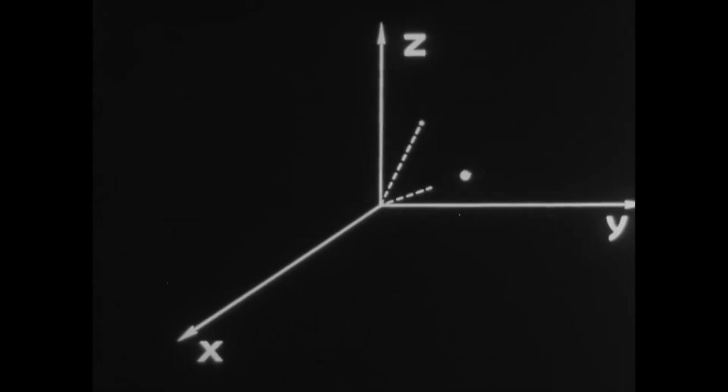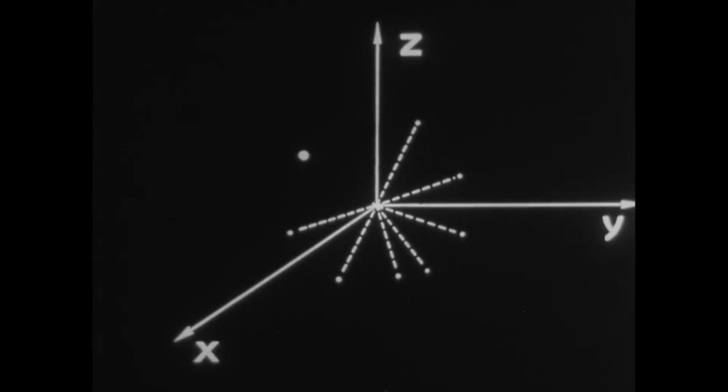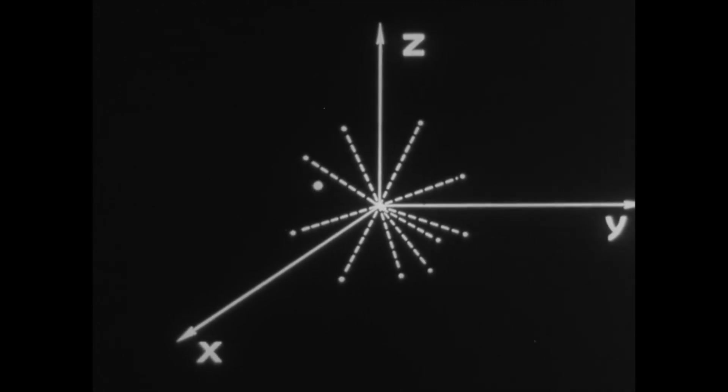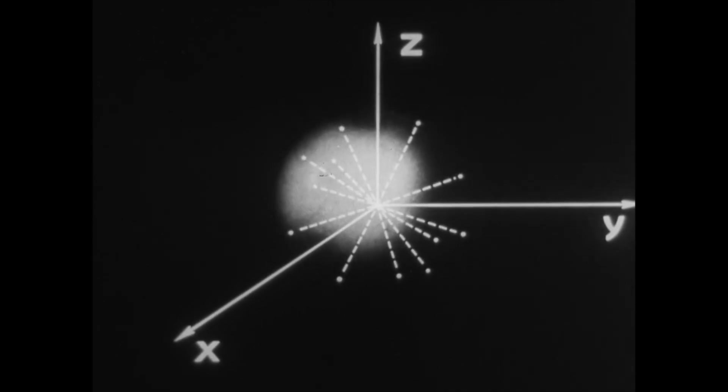The motion of the electron is conveniently examined in a polar coordinate system, with the center coinciding with the nucleus of the atom. Then, the position of the electron is determined by the magnitude and angles of inclination of vectors.